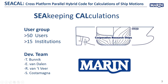SICA and all the investigations present in it belong to an association called CRS — Cooperative Research Ships. It has existed for about 50 years and consists of more than 30 different companies and institutes around the world, mostly from Europe, some from the US, and some from Australia. Every year these companies put money in for research and decide what to do with it. The user group of SICA has about 15 institutions and more than 50 users.